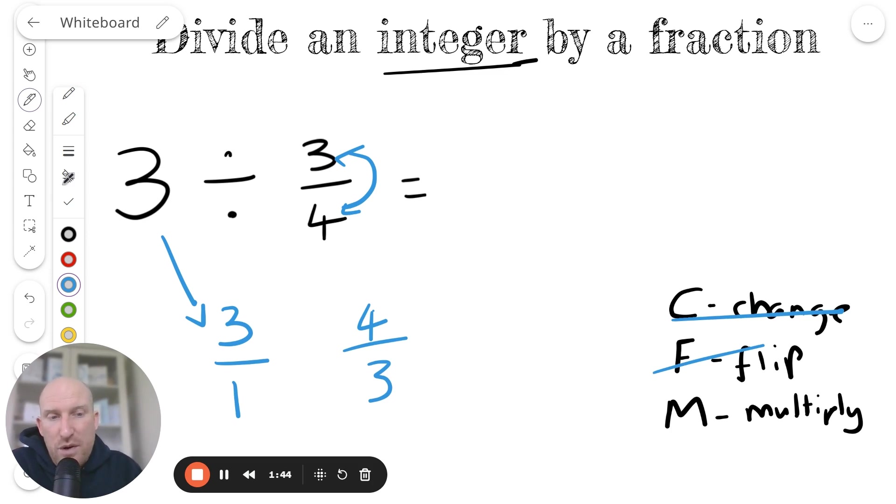And then the final thing we're going to do is change the divide into a multiply. Because we've flipped these, if we multiply them, it'll be the same as dividing them. That's just a funny thing about how maths works.